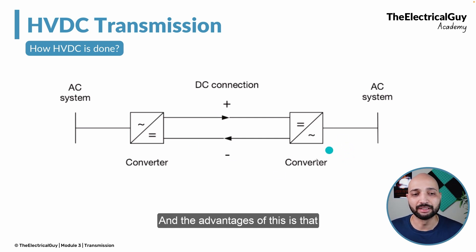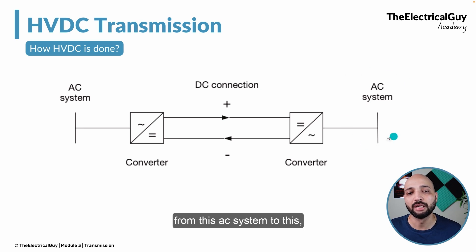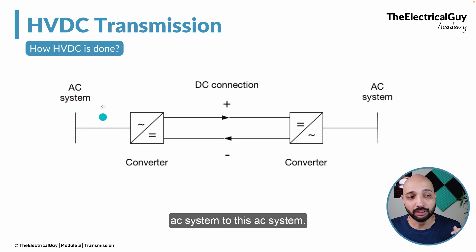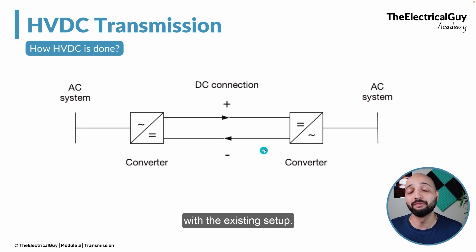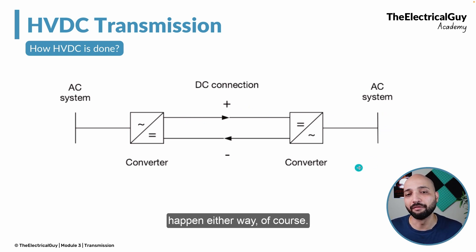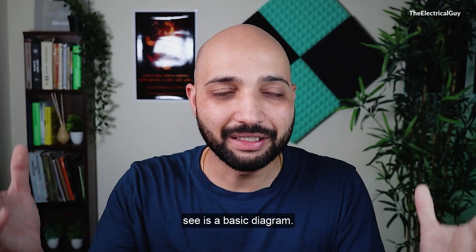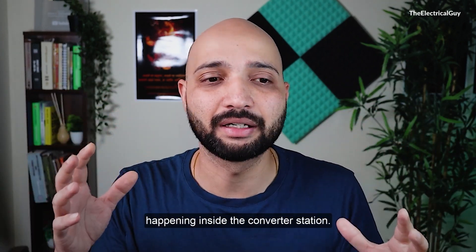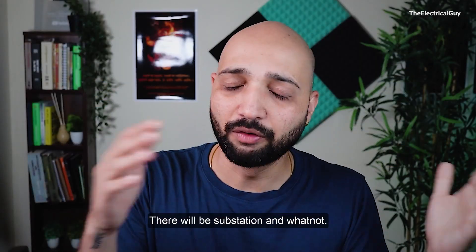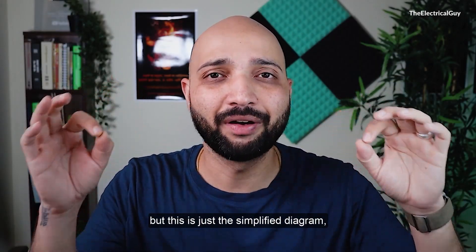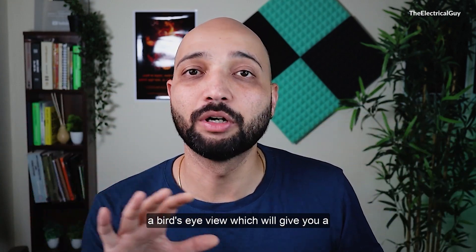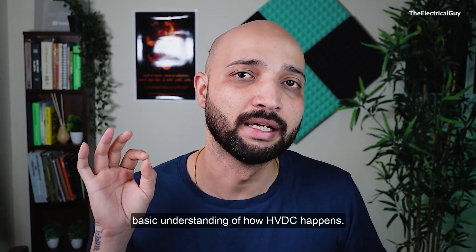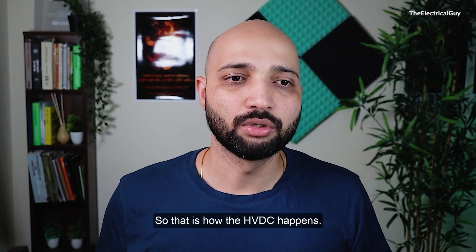One key advantage is that power can flow either way — you can transmit power from the first AC system to the second, or do the opposite, all with the existing setup without any changes. Of course, this is a simplified diagram; there are many things happening inside the converter stations, including substations and more. This is just a bird's eye view giving a basic understanding of how HVDC works.